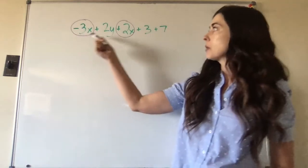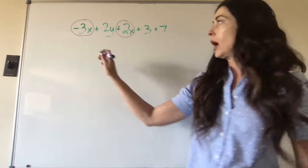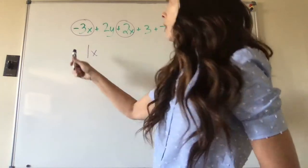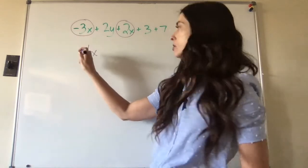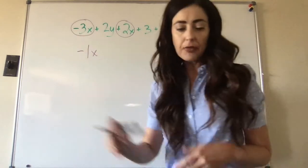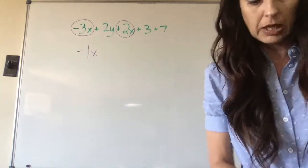We have a negative 3x and a positive 2x. So remember, if the signs are different, we find the difference. So what's the difference between 3 and 2? It's 1. So we're going to be left with 1x. And what kind of x is it going to be? It's going to be negative because the 3 is greater. And we're going to talk about that number 1 in just a minute here.